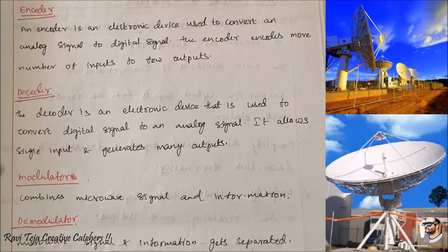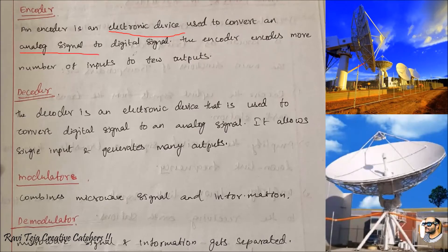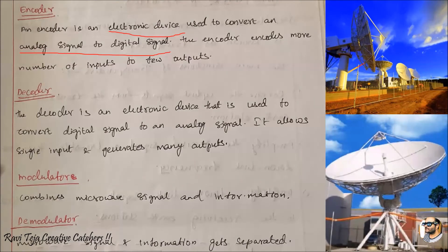These are the antennas you see at Earth Stations which are able to communicate with several satellites. An encoder is an electronic device used to convert an analog signal into a digital signal. The encoder encodes more number of inputs into few outputs. It is also considered a multiplexer, which similarly helps in encoding more number of inputs into few outputs.